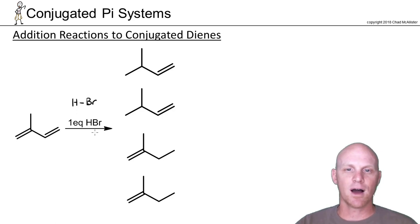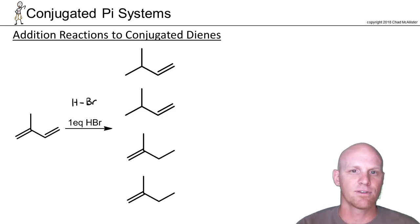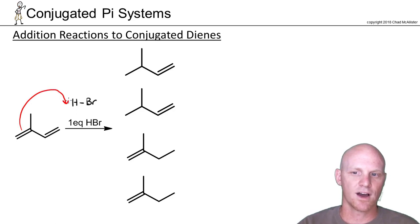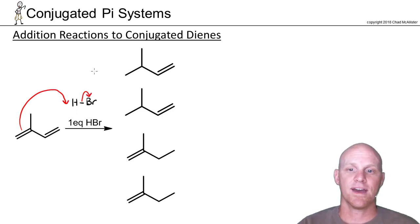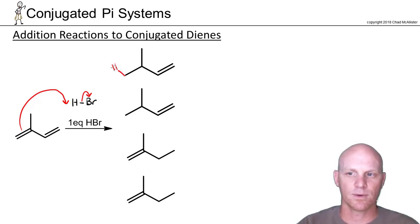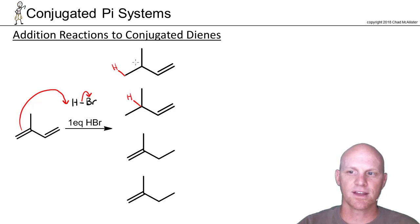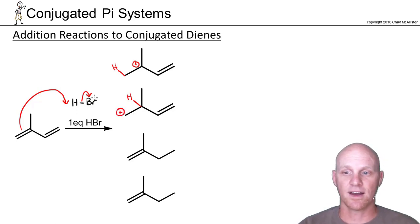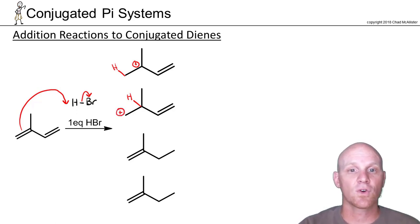First, a reminder of the mechanism: one of the pi bonds attacks H, breaking the H–Br bond, and we add the H. With this pi bond attacking, we could add H on the less substituted side — giving the carbocation on the more substituted side — or add H on the more substituted side, giving the carbocation on the less substituted side.